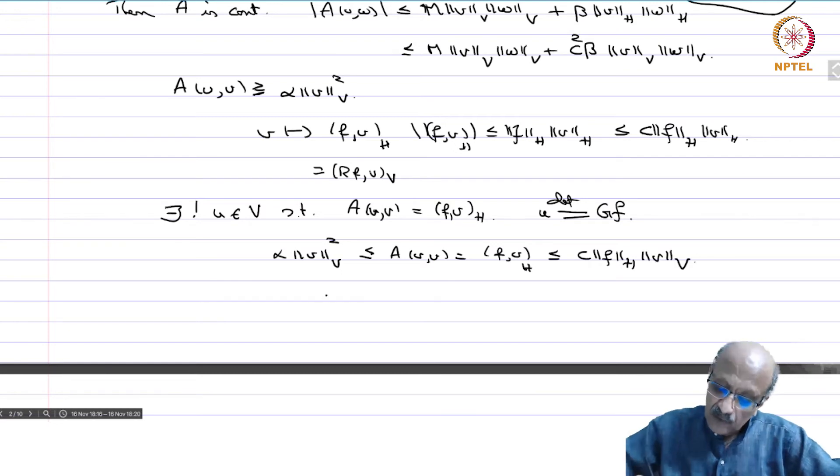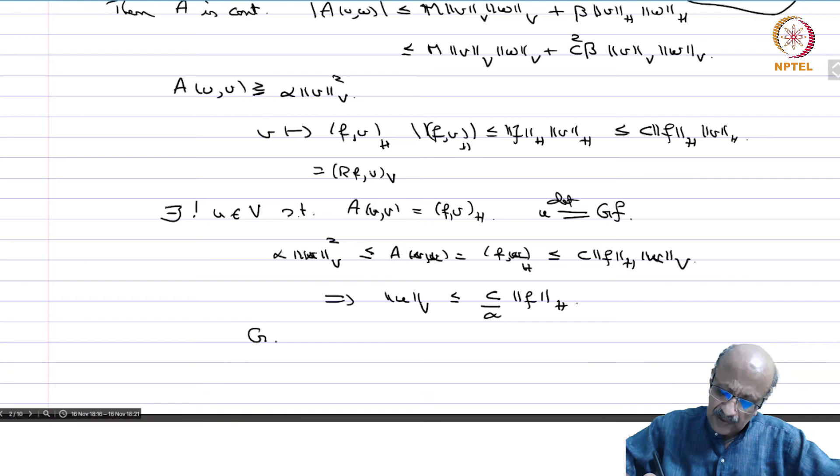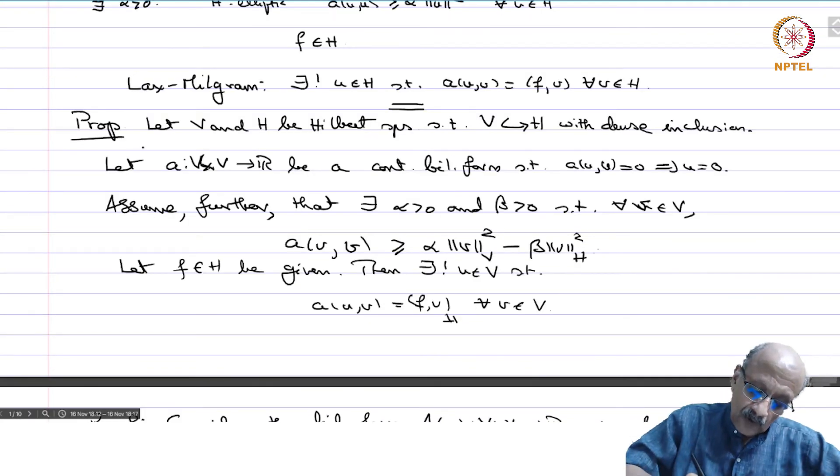Canceling one v, we get ||u||_V ≤ (C/α)||F||_H. Therefore, this mapping G which takes H to V is continuous.